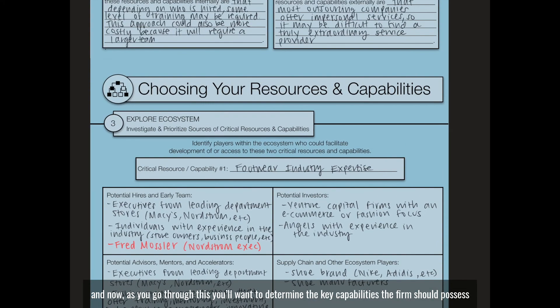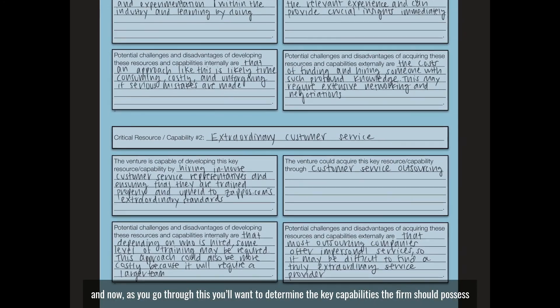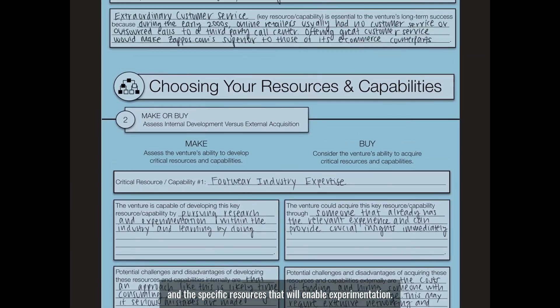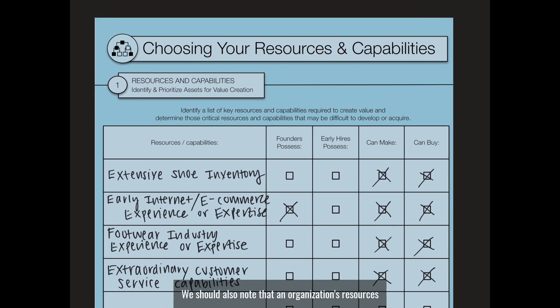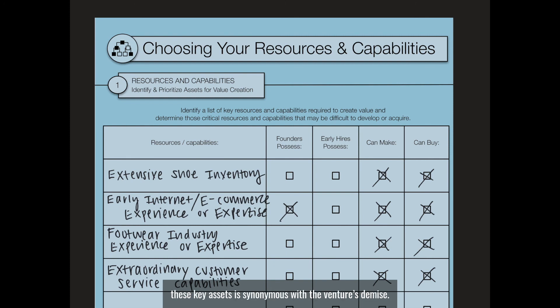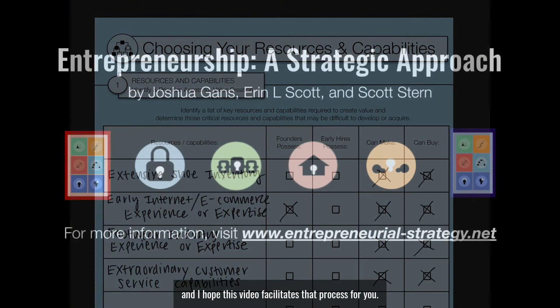As you go through this, you'll want to determine the key capabilities that the firm should possess and the specific resources that will enable experimentation. An organization's resources and capabilities are the means by which value is created and captured, so a failure to identify, prioritize, and source these key assets is synonymous with the venture's demise. These choices should be made deliberately, and I hope this video facilitates that process for you.